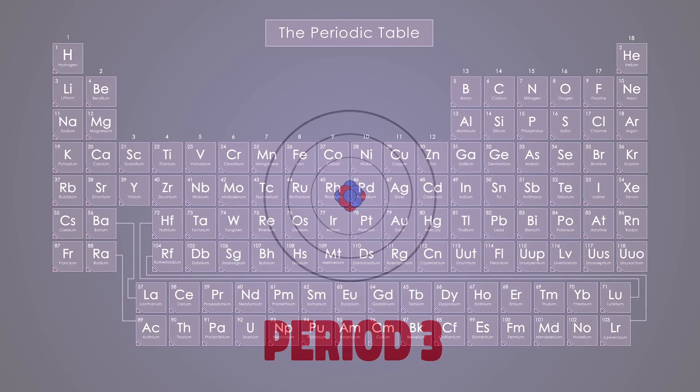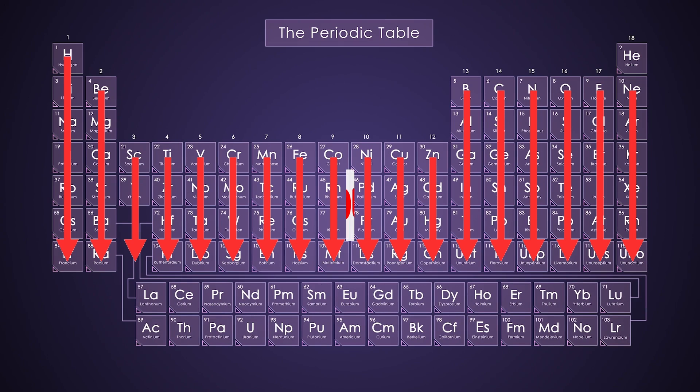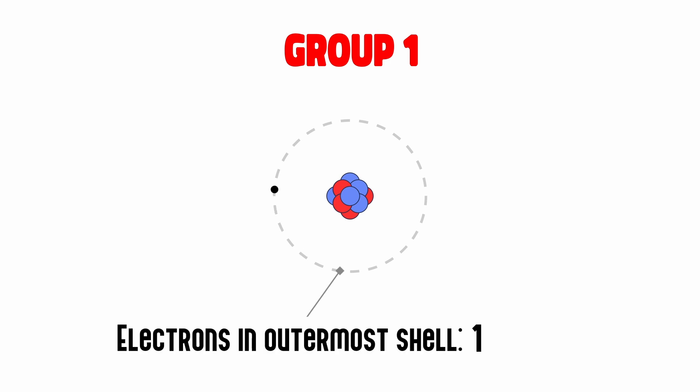The next inference we can make is from the 18 columns, known as groups. All the elements in the group have the same number of electrons orbiting the nucleus in its outermost shell, though there are some exceptions to this rule.